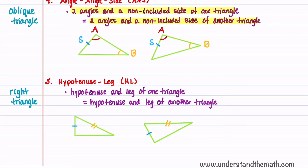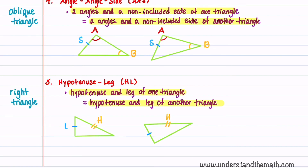Theorems one through four were for oblique triangles, or triangles that are not right triangles. Our last theorem is for a right triangle and is called hypotenuse-leg. The hypotenuse and leg of one triangle is equal to the hypotenuse and leg of another triangle. The two hypotenuses are equal, and then one pair of legs are equal.